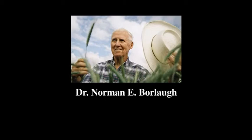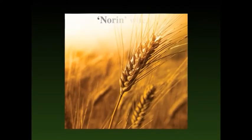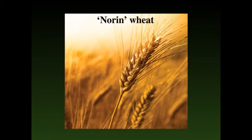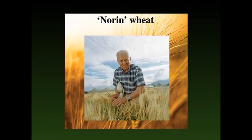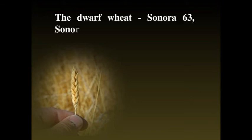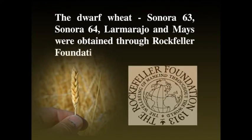Wheat variety development in India began with pioneering research of Mexican and American scientists. Dr. N.E. Borlaug, known as the father of the green revolution in India, did remarkable research on wheat variety development. The dwarfness of Norin wheat was transferred to spring wheat by Indian scientists under his guidance. The dwarf wheat varieties Sonora 63, Sonora 64, Lerma Rojo, and Mexipak were obtained through the Rockefeller Foundation in 1963.